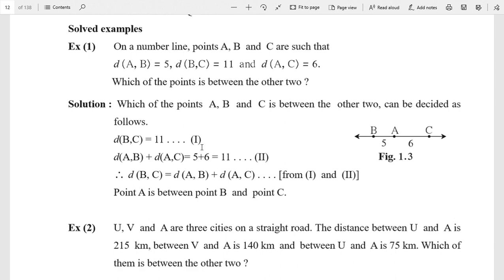Next step, we do addition. That is d(A,B) + d(A,C) equals, distance AB is 5 plus distance AC is 6, that is 5 + 6 = 11, that is equation number second. In equations 1 and 2, the right side is equal, this one is 11 and this one is also 11. So if the right side is equal, the left side is also equal.